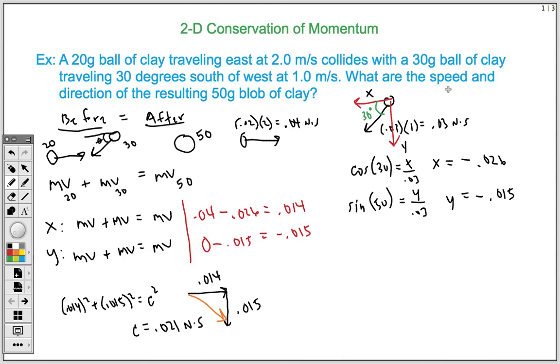We need to, though, find the speed of that ball. So if we know that the momentum is 0.021, and we know that momentum equals mass times velocity, we know what the mass is, we can solve for the velocity. So 0.021 equals our 50 grams, which is 0.050 kilograms, times velocity. We will divide by 0.050. So our velocity, our speed, comes out to be 0.41 meters per second.